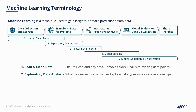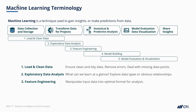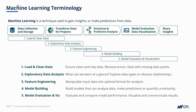Feature engineering is where we manipulate data into an optimal format for analysis, overlapping heavily with the data transformation step. Model building is where we use our data for its intended purpose — building models that analyze data, make predictions, or quantify uncertainty in some way. Model evaluation and visualization is where we evaluate and compare model performance, helping us go back and improve the model before translating stats and jargon into meaningful outputs for users. Remember, this process is not linear — we may need to collect more data, modify categories or groupings, and the evaluation of results might bring up new questions or project objectives. It's possible and often necessary to cycle back at any point.